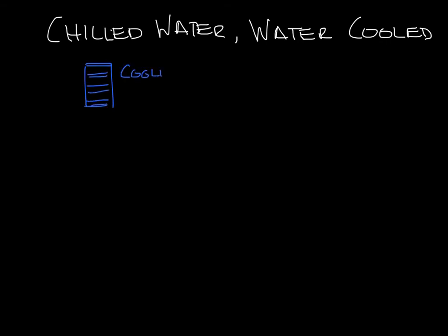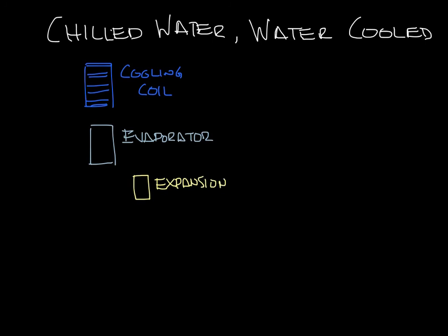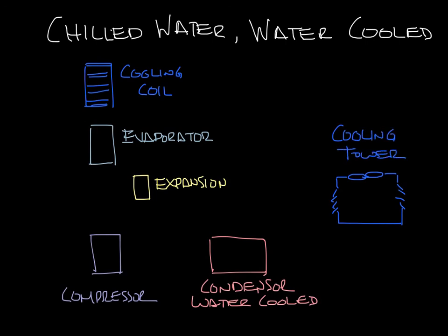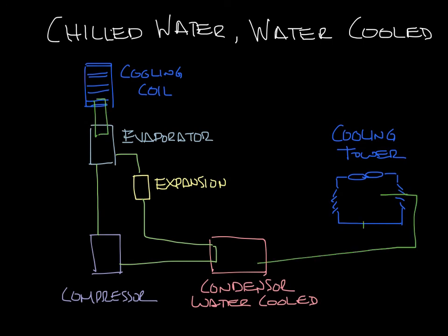We have our cooling coil, our evaporator, our expansion device, the compressor, and the condenser, which is water-cooled, and our cooling tower. So now you have the loop going from the evaporator to the compressor to the condenser to the expansion device and back to the evaporator, plus a chilled-water loop that goes from the cooling coil to the evaporator, plus the loop that goes from the cooling tower to the water-cooled condenser.